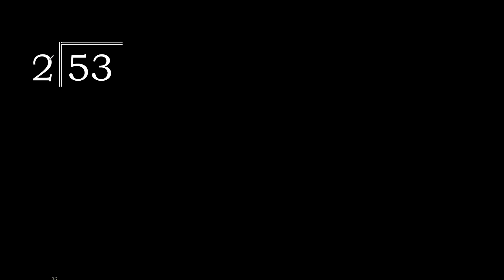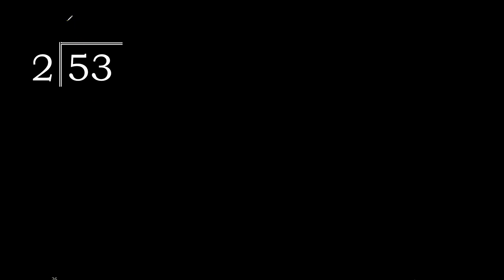53 divided by 2. 5 is not less than 2, therefore with 5: 2 multiplied by 3 is 6 — too big. 2 multiplied by 2 is 4. 4 is not greater than 5. 5 minus 4 is 1.